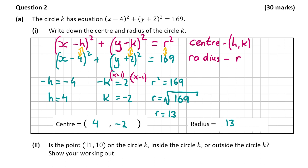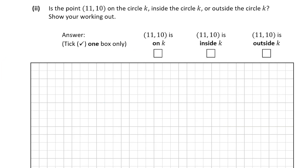That's my answer for part a(1), worth 10 marks. Now part a(2) asks us to work out if the point (11, 10) is on the circle, inside the circle, or outside the circle. Let's remind ourselves of the equation of the circle. The point (11, 10) has x = 11 and y = 10.